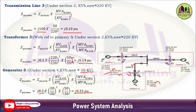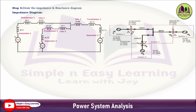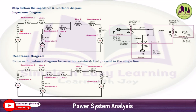In the impedance diagram: generator G1 reactance j0.5, transformer T1 j0.2, line 1 j0.05, then a central junction with line 2 j0.08, transformer T2 j0.17, generator G2 j0.33, and from the junction: line 3 j0.1, transformer T3 j0.14, generator G3 j0.33. Since resistance and shunt capacitance are not given, the impedance diagram and reactance diagram remain the same.